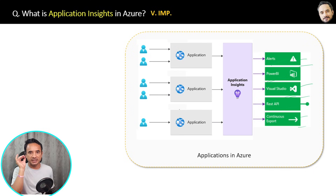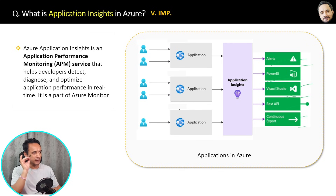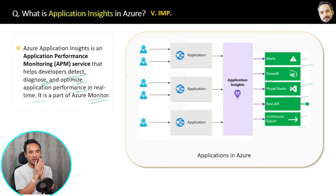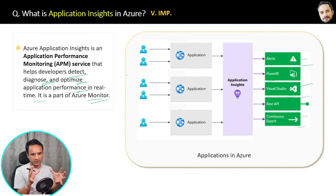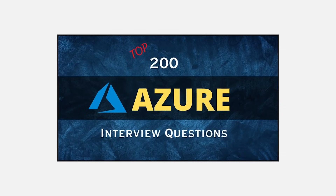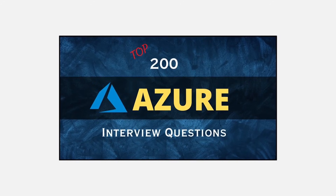In short, Application Insights is a part of Azure Monitor. It is an application performance monitoring service that helps developers detect, diagnose, and optimize application performance in real time. As a developer, you use Application Insights to analyze requests and improve the performance of your application based on that analysis.